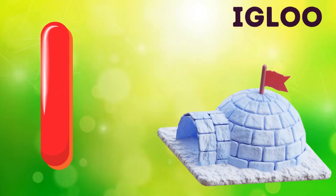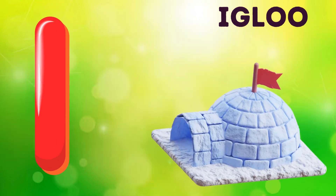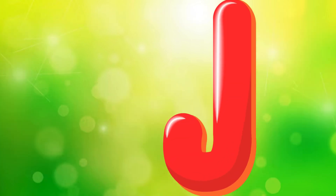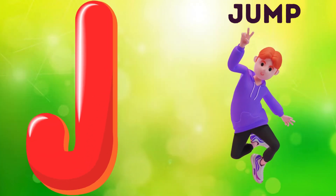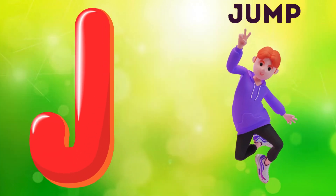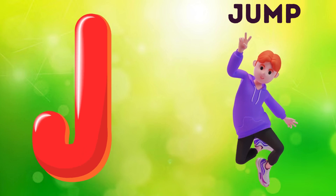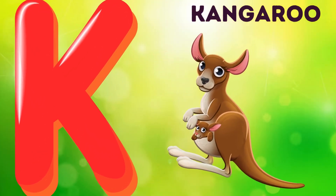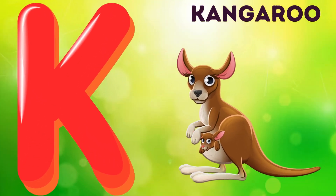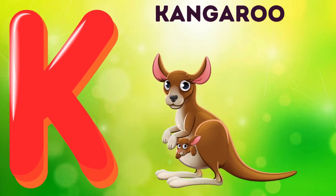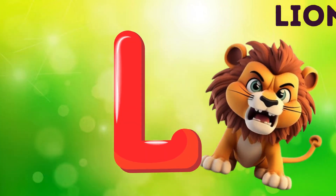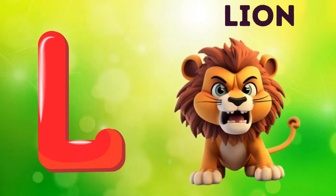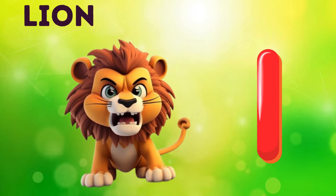I is for igloo, i-i-igloo. J is for jump, j-j-jump. K is for kangaroo, k-k-kangaroo. L is for lion, l-l-lion.